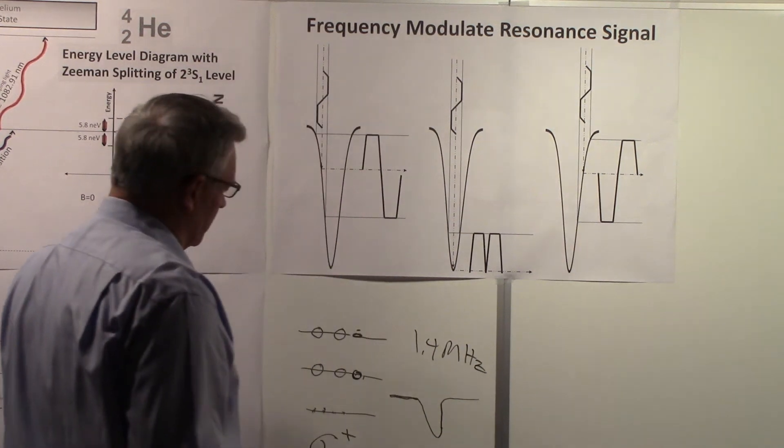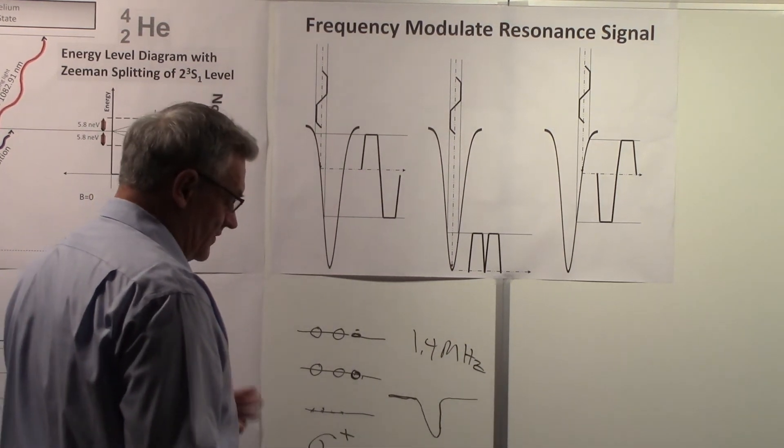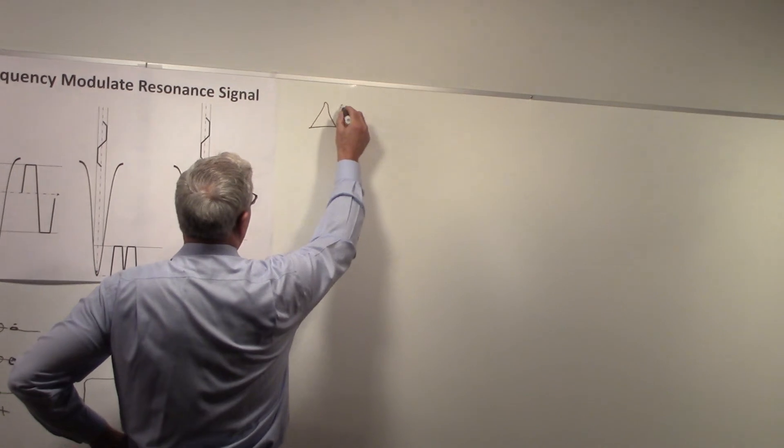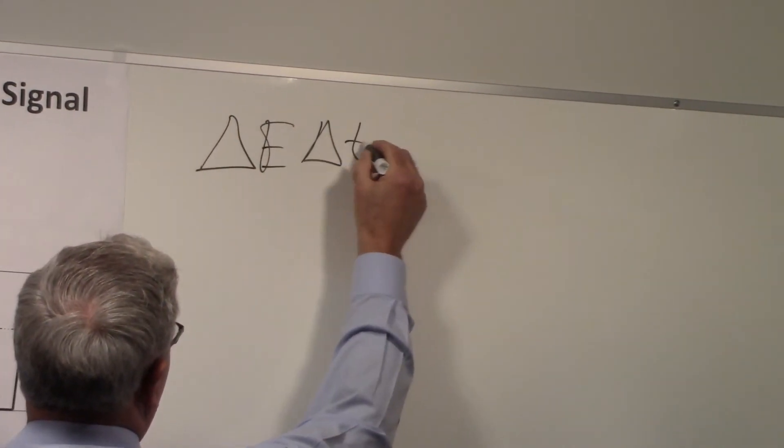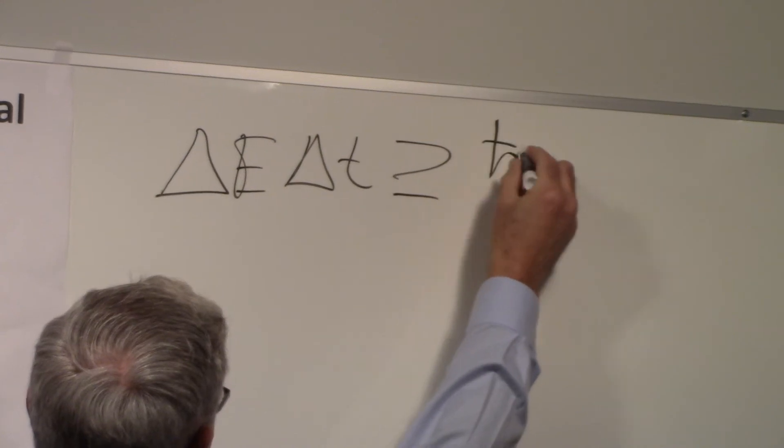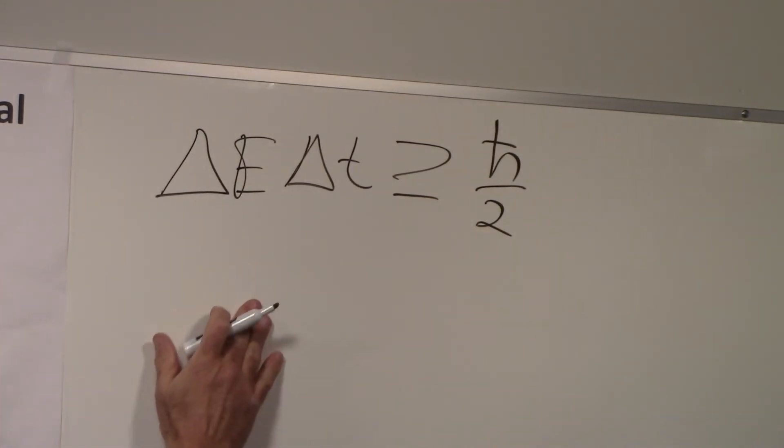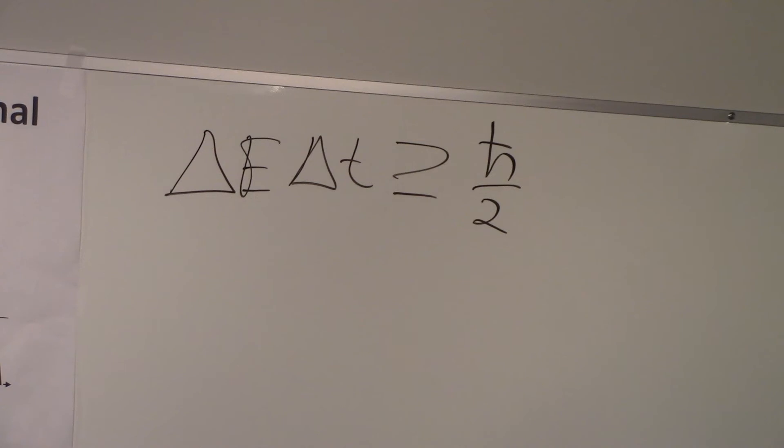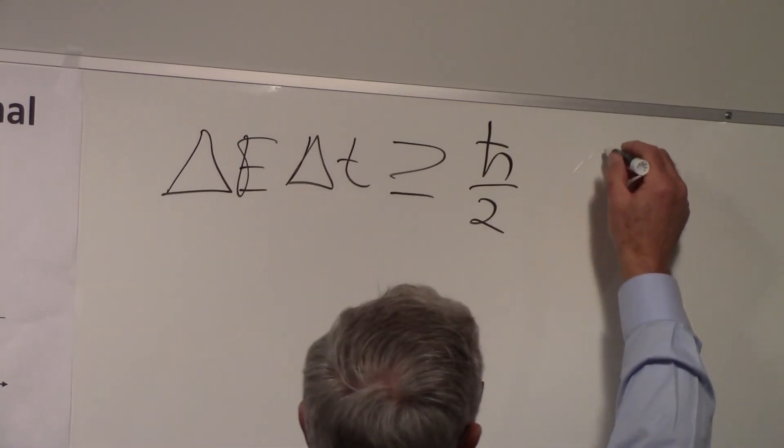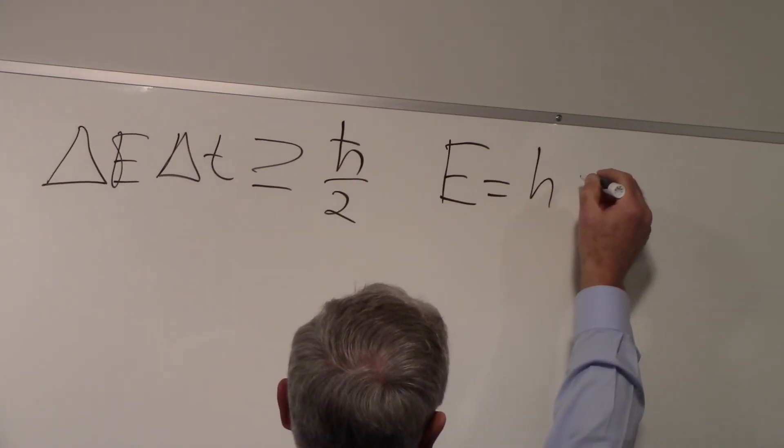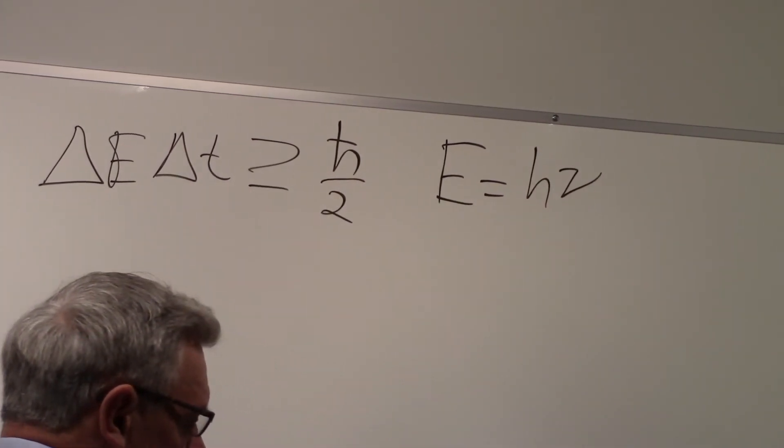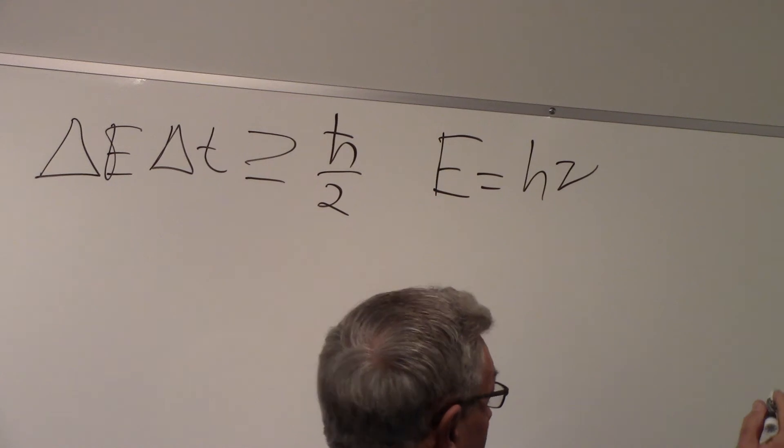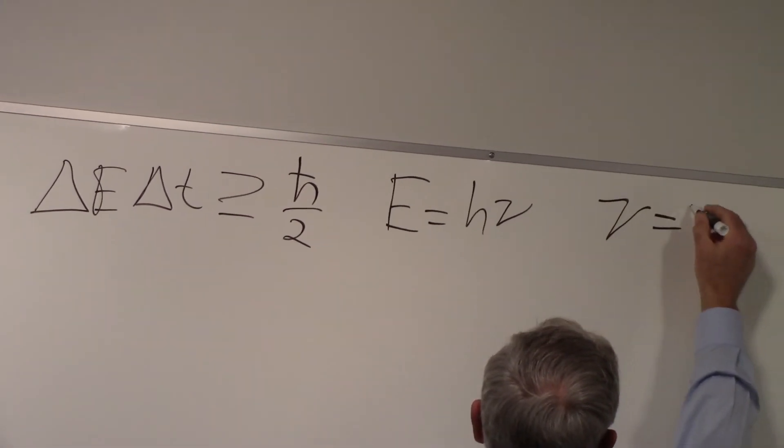Now, we want to talk about using the uncertainty principle. So if we come over here, we have delta E delta T is greater than or equal to H bar over 2. That's the Heisenberg energy-time uncertainty principle. Now, one of the other equations that we need, we showed earlier, and that's Planck's law, E equals h nu. So we have E is equal to h nu. And then that frequency nu, which corresponds to the 1.4 megahertz over here, that is related to the magnetic field through that equation we talk about, gamma B.